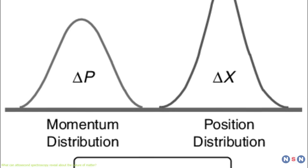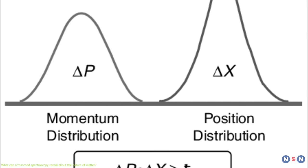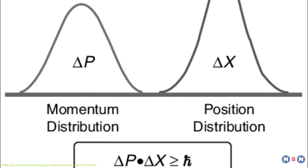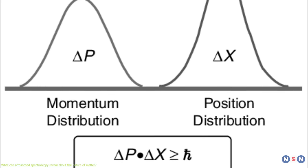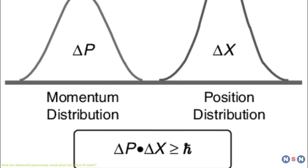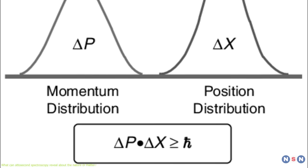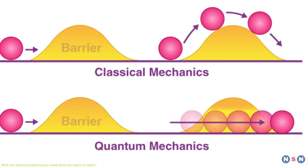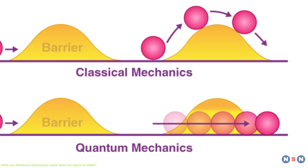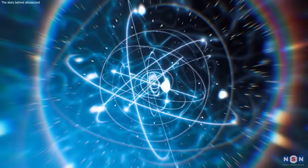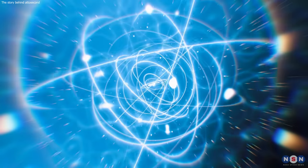The uncertainty principle is how to explain why there is a limit to how precisely we can measure certain pairs of physical quantities, such as position and momentum or energy and time. The tunneling effect explains why quantum particles can pass through potential barriers that classical particles cannot, such as electrons escaping from atoms or nuclei.